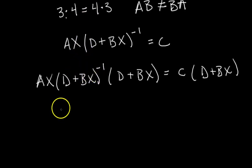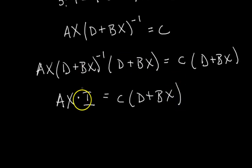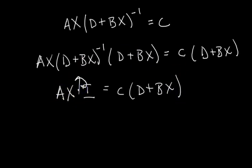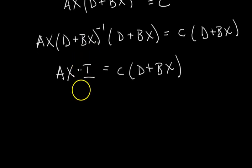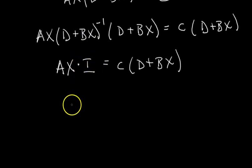So then this left-hand side simplifies to A times X times the identity matrix equals C times D plus BX, right? And A times X times I—the I doesn't change anything. It's just like multiplying by one. So the left-hand side simplifies further to A times X equals C times D plus BX.